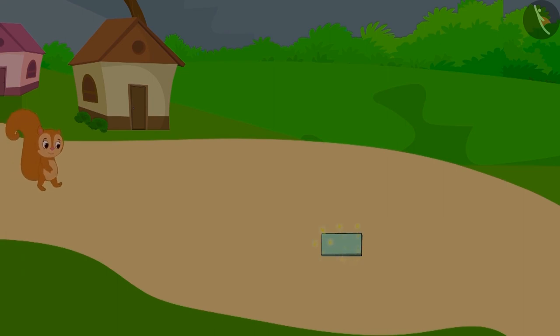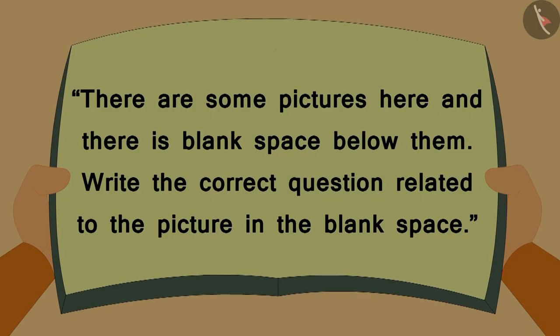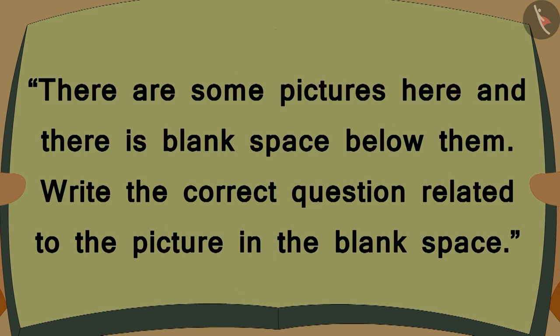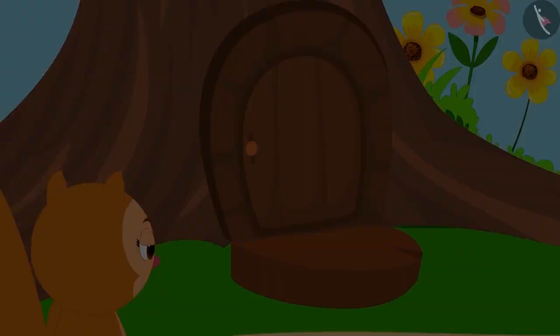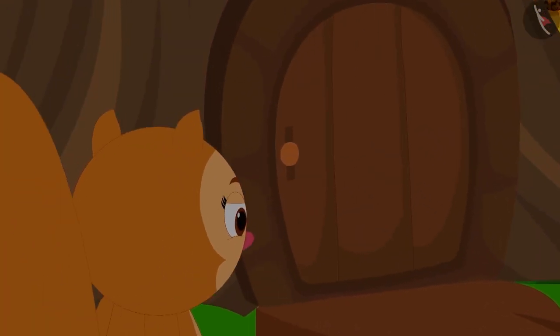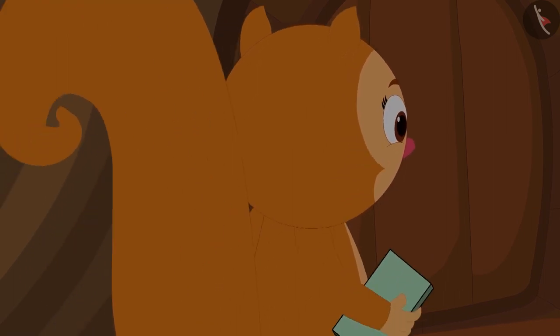One night, Chanda was returning from her shop. She found a book on the way. In the book, it was written: there are some pictures here and there is a blank space below them. Write the correct questions related to the picture in the blank space. Chanda picked up the book and took it to her home.